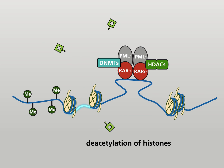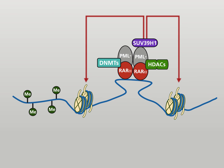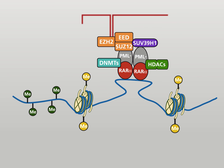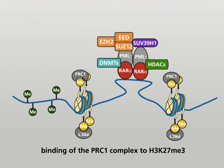In addition, proteins of the polycomb group are recruited. The protein shown in lilac here is a histone methyltransferase, which trimethylates lysine residues in position 9 of histone 3. The EZH2 polycomb protein is a histone methyltransferase, which trimethylates the lysine residue in position 27 of histone 3. The trimethyl mark of H3K27 recruits the polycomb repressor complex 1.